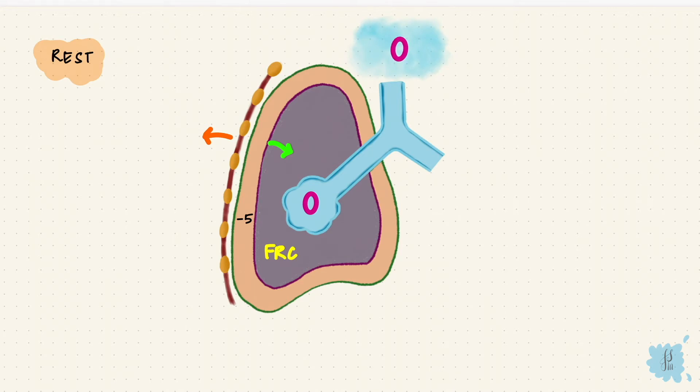Remember, we consider the atmosphere to be zero, and that's our reference. So now there's no gradient, there's no airflow, and the system is at equilibrium. So this is the situation at rest.